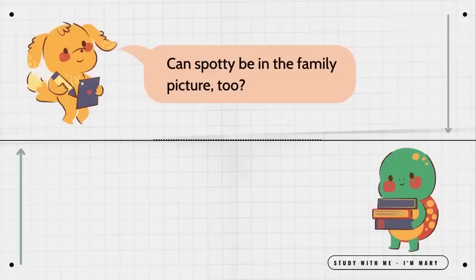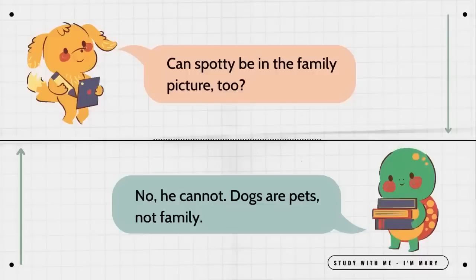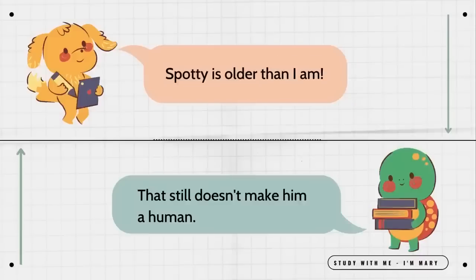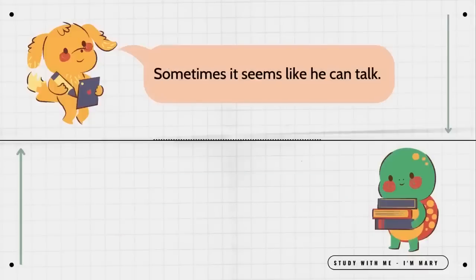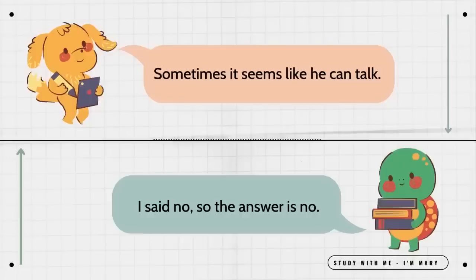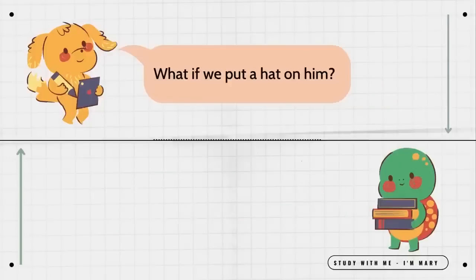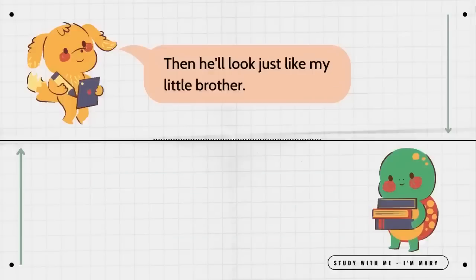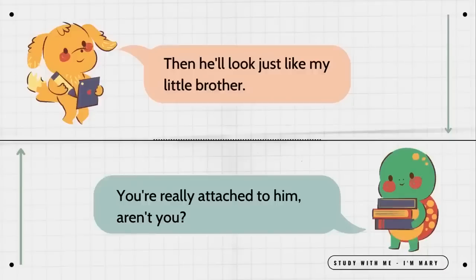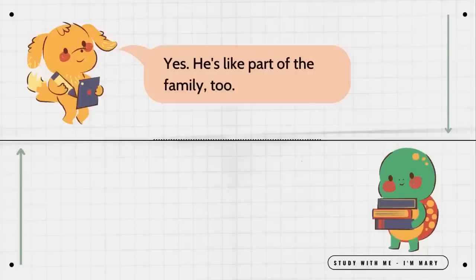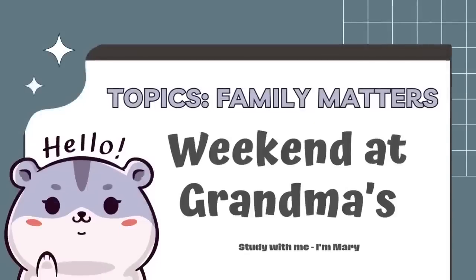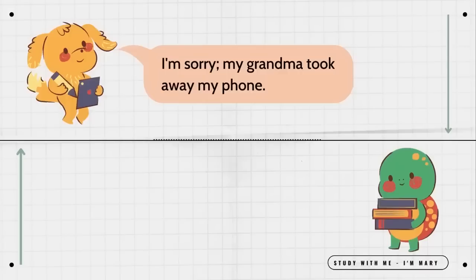Can Spotty be in the family picture too? No, he cannot. Dogs are pets, not family. Spotty is older than I am. That still doesn't make him a human. Sometimes it seems like he can talk. I said no, so the answer is no. What if we put a hat on him? Why would you want to do that? Then he'll look just like my little brother. You're really attached to him, aren't you? Yes, he's like part of the family too. Alright, he may be in the photo, but no hat.